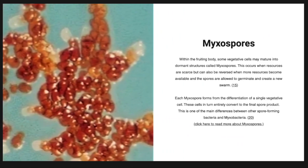Myxospores. Within the fruiting body, some vegetative cells convert to dormant spores called myxospores. This occurs when resources are scarce, but can be reversed when more nutrients become available. Each myxospore forms from the differentiation of an individual vegetative cell. These cells, in turn, entirely convert to the final spore product. This is one of the main differences between other spore-forming bacteria and myxobacteria.